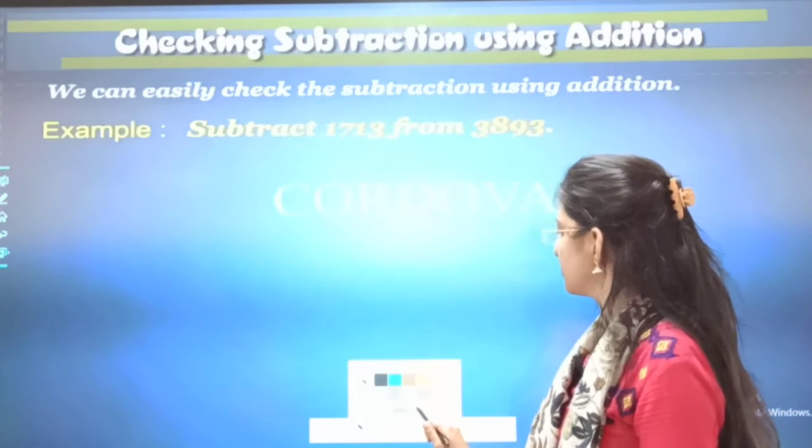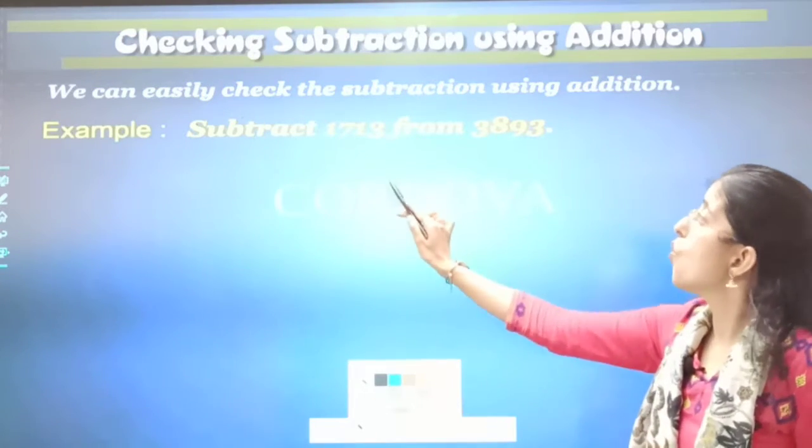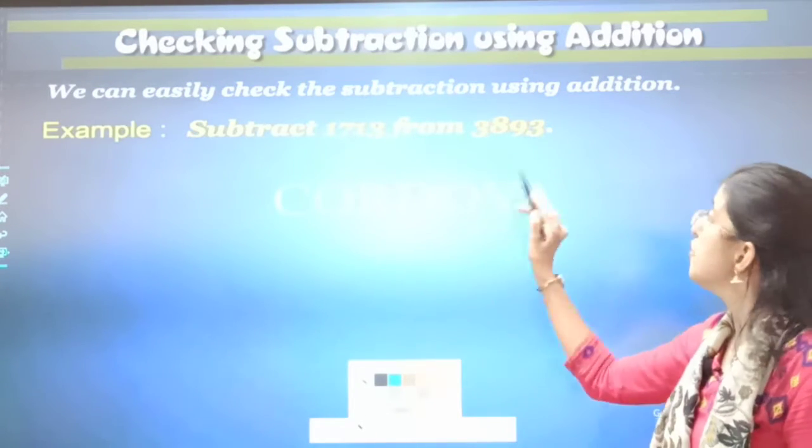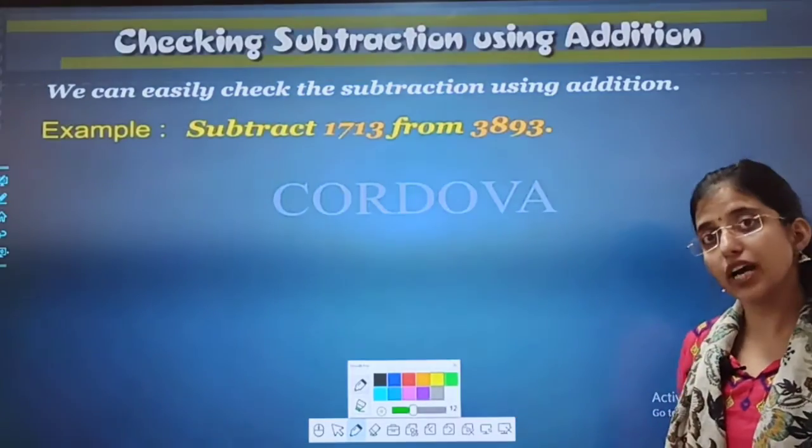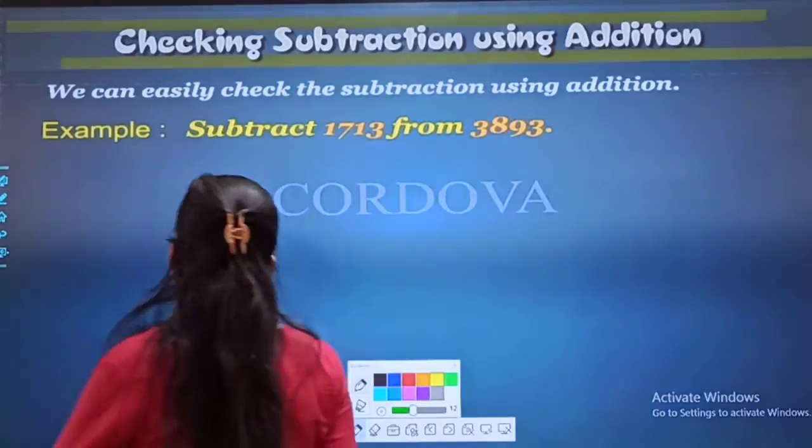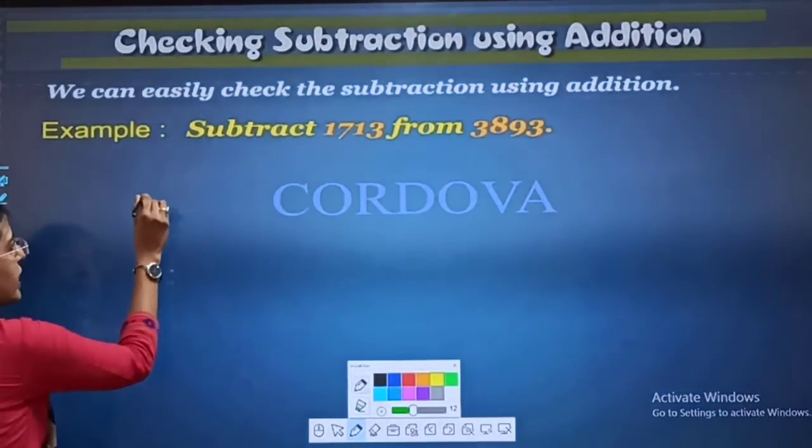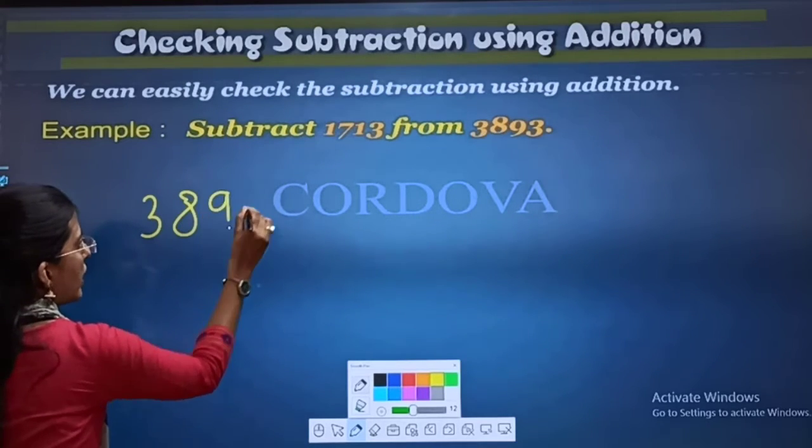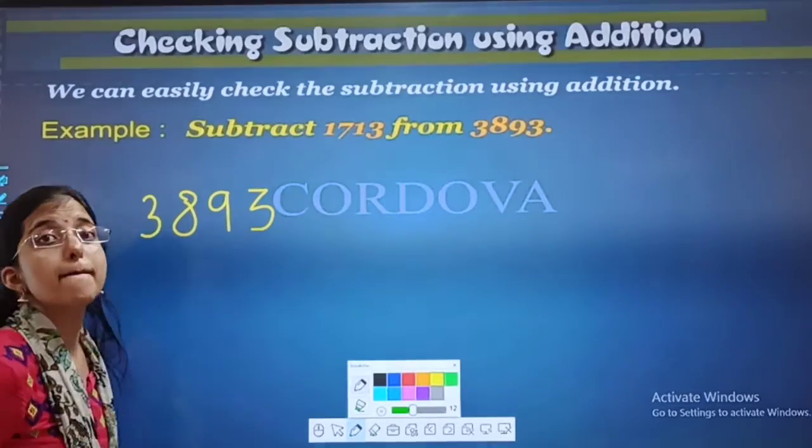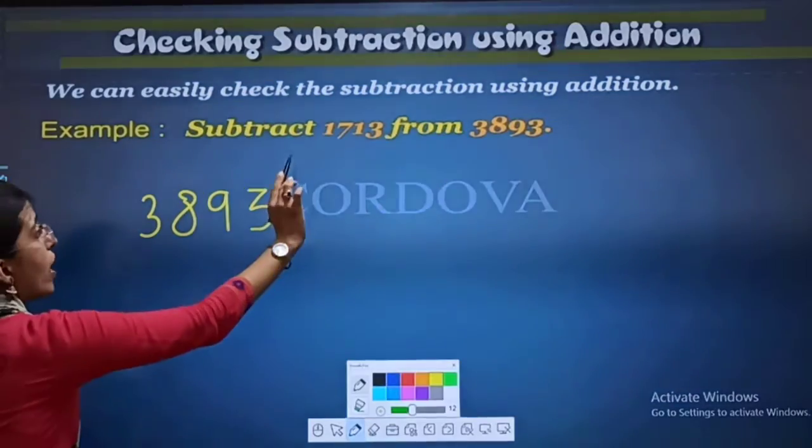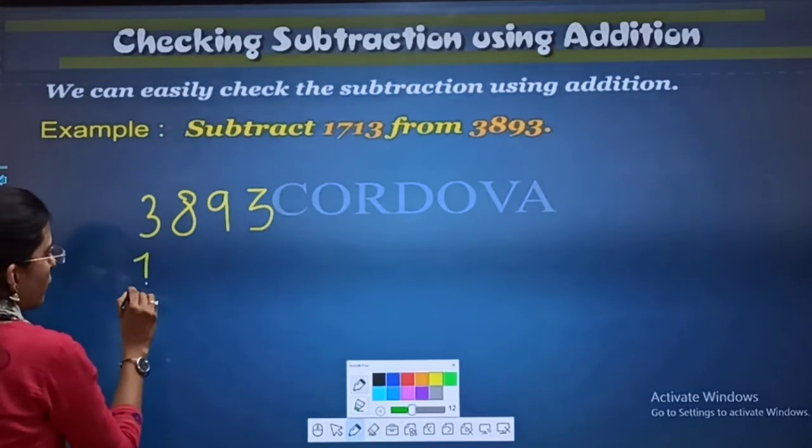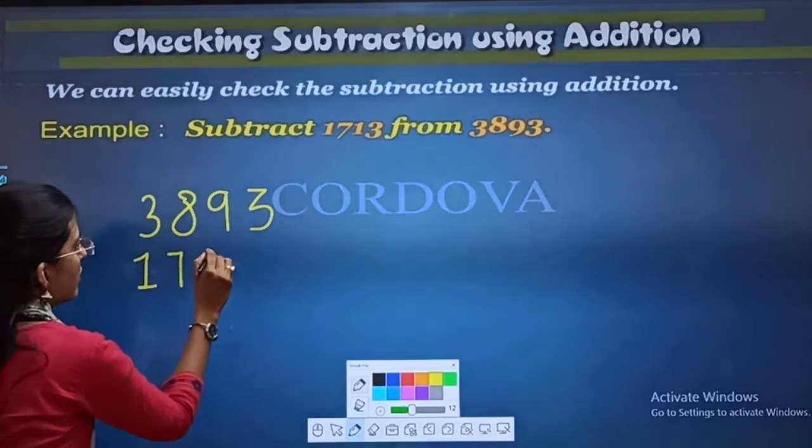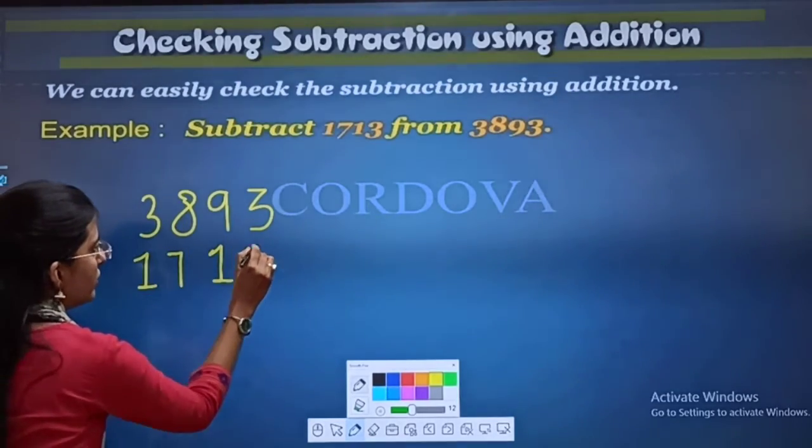See, example: subtract 1713 from 3893. So, let's start now. I will write 3893 minus 1713. So, 1713.